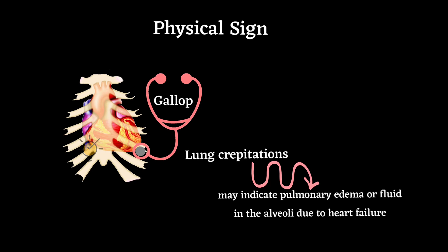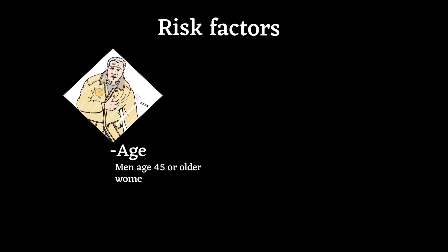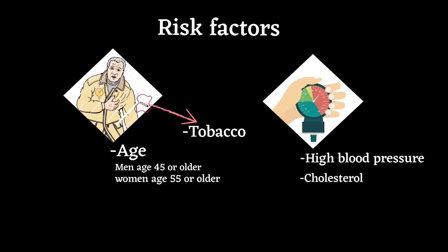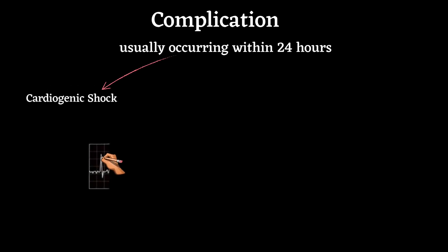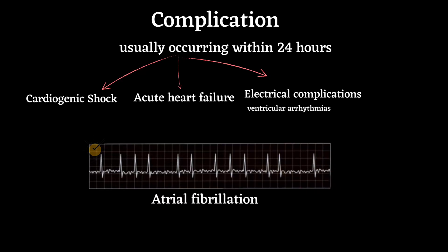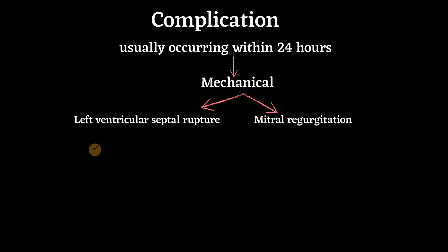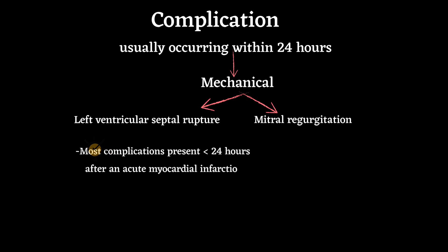Risk factors include age — men 45 or older and women 55 or older — tobacco use, high blood pressure, and elevated cholesterol or triglyceride levels. Complications of myocardial infarction usually occurring within 24 hours include cardiogenic shock, acute heart failure, electrical complications such as ventricular arrhythmia and atrial fibrillation, pericarditis, and mechanical complications such as left ventricular septal rupture and mitral regurgitation.